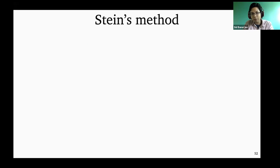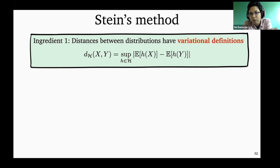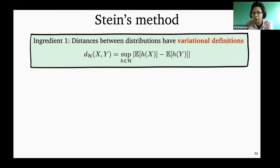For any Stein's method calculation, there are two core underlying ingredients. The first is this idea that if you want to compare two distributions, one way of doing that is taking some metric or distance between distributions and seeing that the distributions are close in the metric. Most metrics have a certain variational characterization — instead of thinking of the metric in terms of distance, you can think of it as the worst case difference between expectations under these two distributions, over some test class of functions.